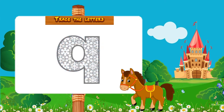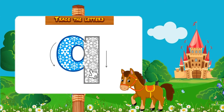For small Q, start from the middle and draw a curve. Then going to the middle again, draw a straight line down.